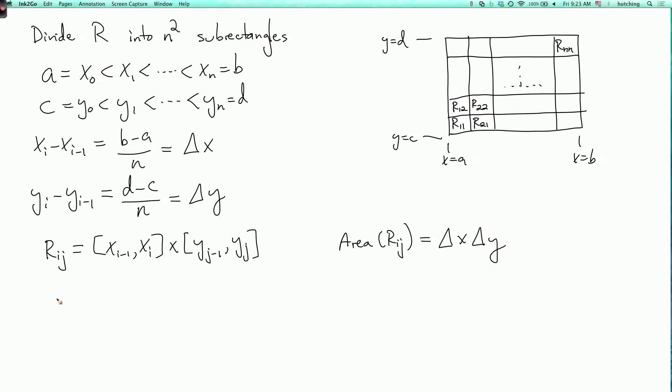And now we'll choose a sample point, (x_ij star, y_ij star) in the rectangle R_ij. And now we can make the definition.